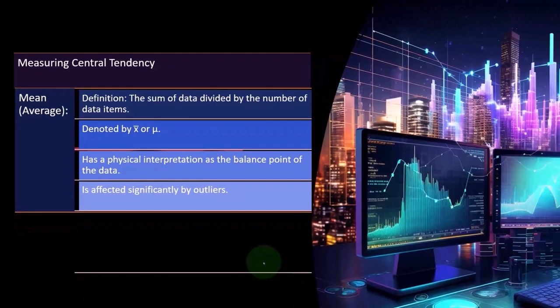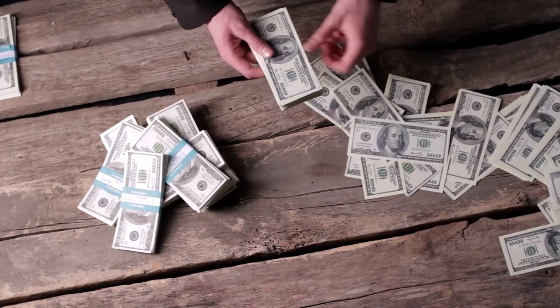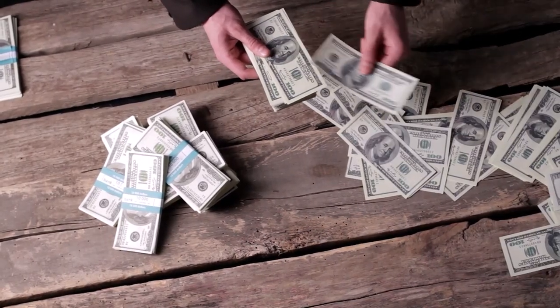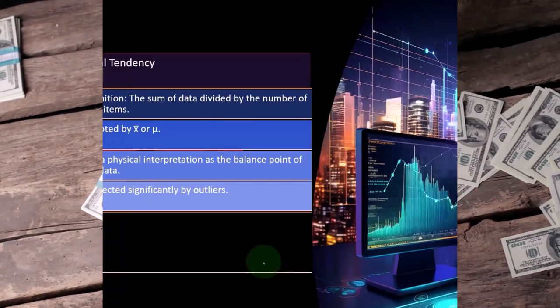It's affected significantly by outliers. So if we had outliers, such as we saw with some of our salary data set, if we then added the CEO salary, which was like millions or millions of dollars, then that might have an impact or will have an impact on the mean.